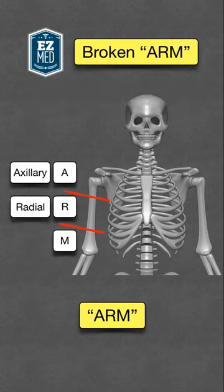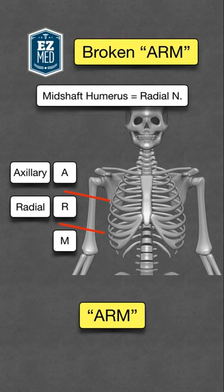R stands for radial nerve. This will help you remember that a fracture to the mid-shaft of the humerus may damage the radial nerve.